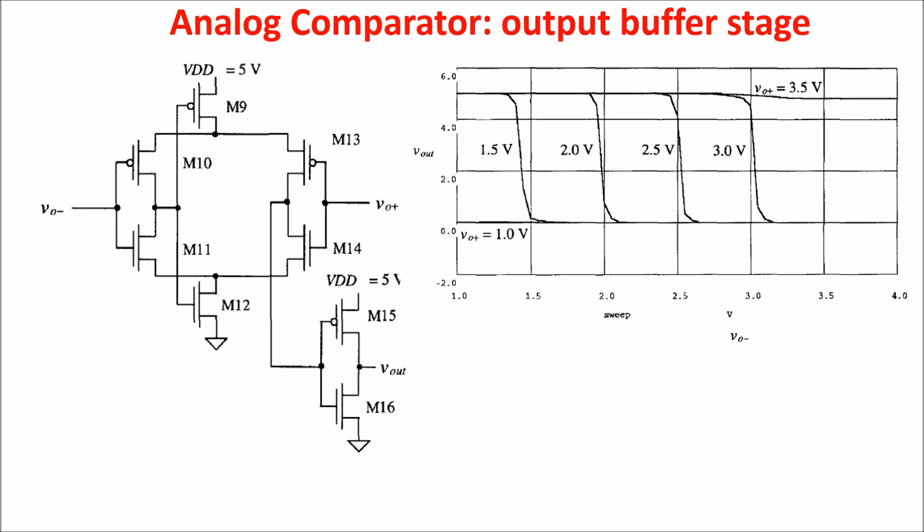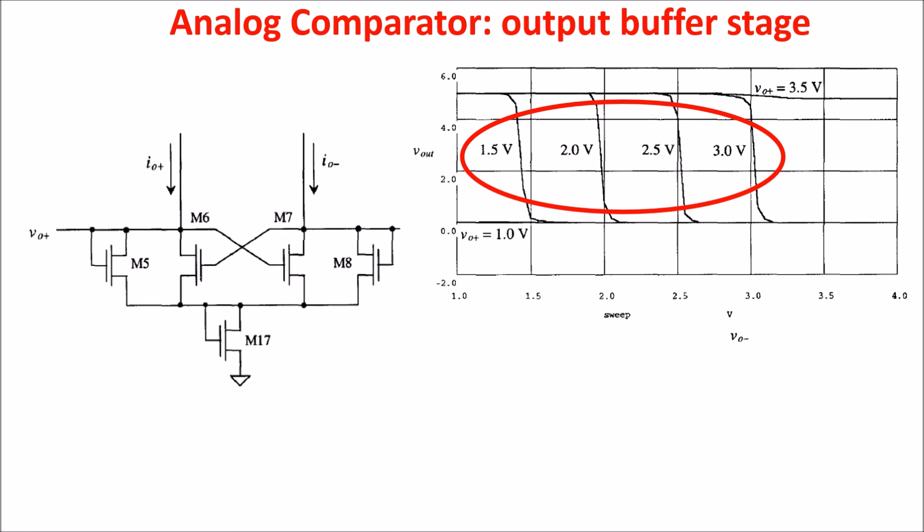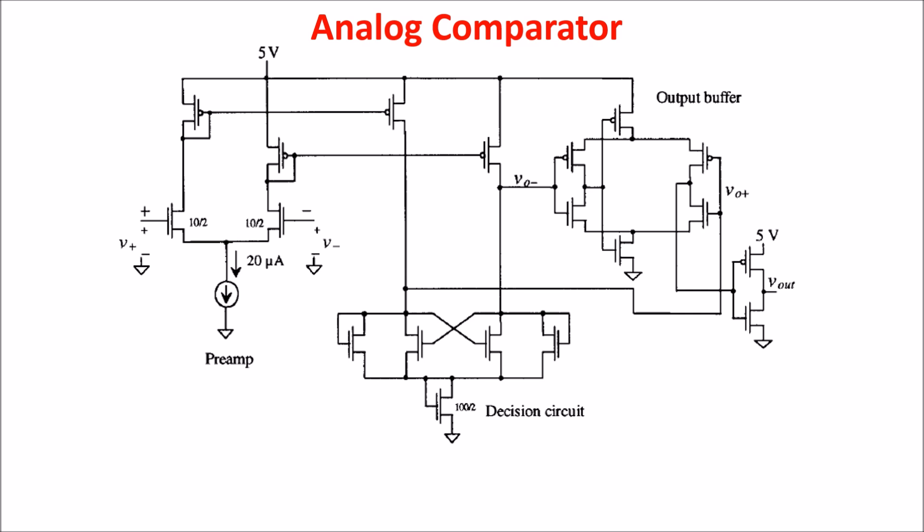Here we see a simulation in which we sweep VO minus from 1 to 4 volts, and we increase VO plus from 1 to 3.5 volts through steps of 0.5 volts increments. As you see, for linear operation of the output buffer, the input has to be between 1.5 volts and 3 volts. Comparing this result with the output of the decision circuit, we see a problem because it swings from 0 to 2 times V thresholds, or more or less 1.5 volts. For this reason, we have to add the M17 transistor to shift the output of the decision circuit up of approximately 1 volt. So here we have the final circuit where the MOSFET M17 is added in series with the decision circuit to increase the average voltage out of the decision circuit.